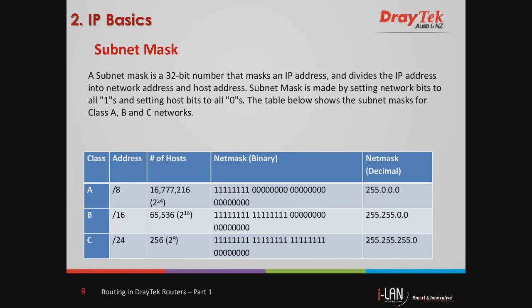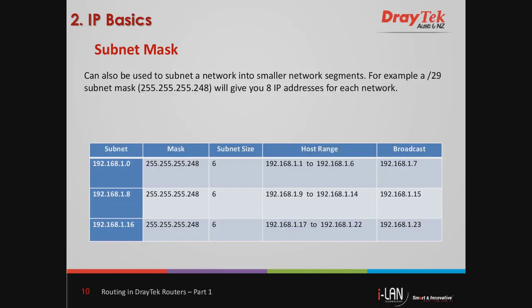A subnet mask is a method used to break down a subnet into smaller networks. A subnet mask is made by setting network bits to all 1s and setting host bits to all 0s. The table below shows the subnet masks for class A, B, and C networks. The subnet mask can also be used to subnet a network into smaller network segments. For instance, a /29 subnet mask, that is 255.255.255.248, will give you 8 IP addresses for each network, where the host part equals 2² + 2¹ + 2⁰, that is 4 + 2 + 1, which equals 8 possibilities.